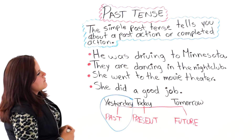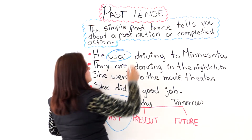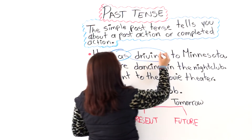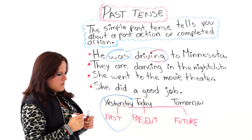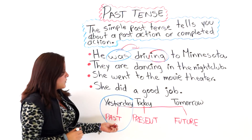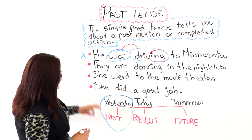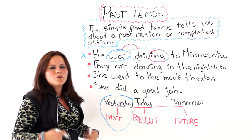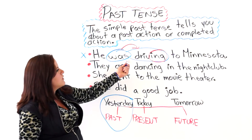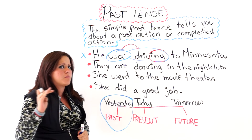The first one says: he was driving to Minnesota. We have 'was,' which is a past tense of 'be,' but then we see another verb that ends in '-ing.' That tells you that it is progressive — specifically, the past progressive tense. We just want to focus on the simple past, so this wouldn't be correct. We want to know what happened, not what was happening. If you have a verb in past plus a verb in '-ing' form, that is not the simple past tense — that is the past progressive.